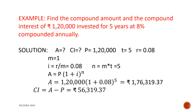Compound interest equals amount minus principal. In this question, we already calculated amount as 1,76,319.37 and the principal is given as 1,20,000. The difference of these two gives us compound interest, which is equal to rupees 56,319.37.